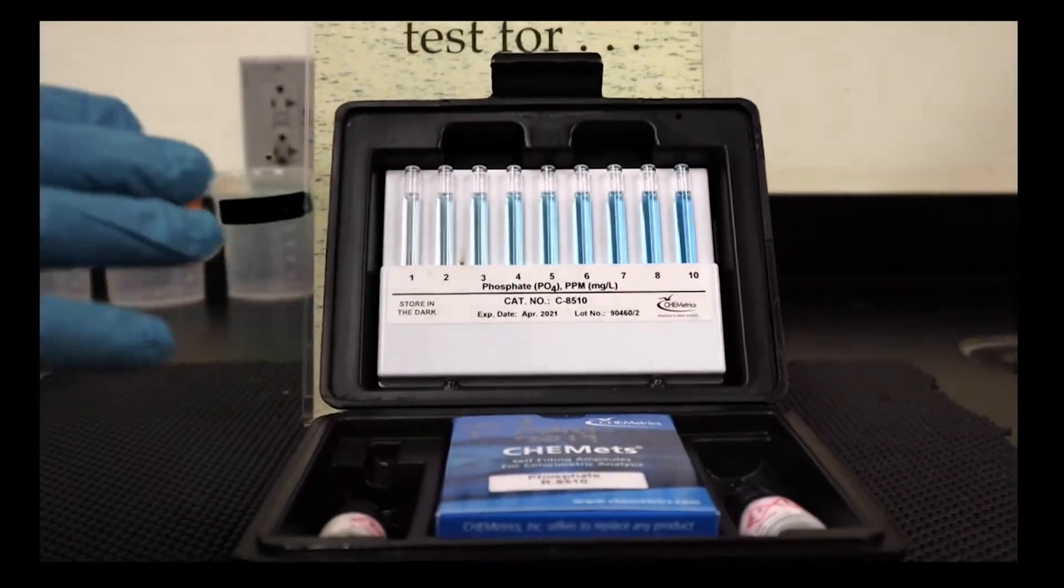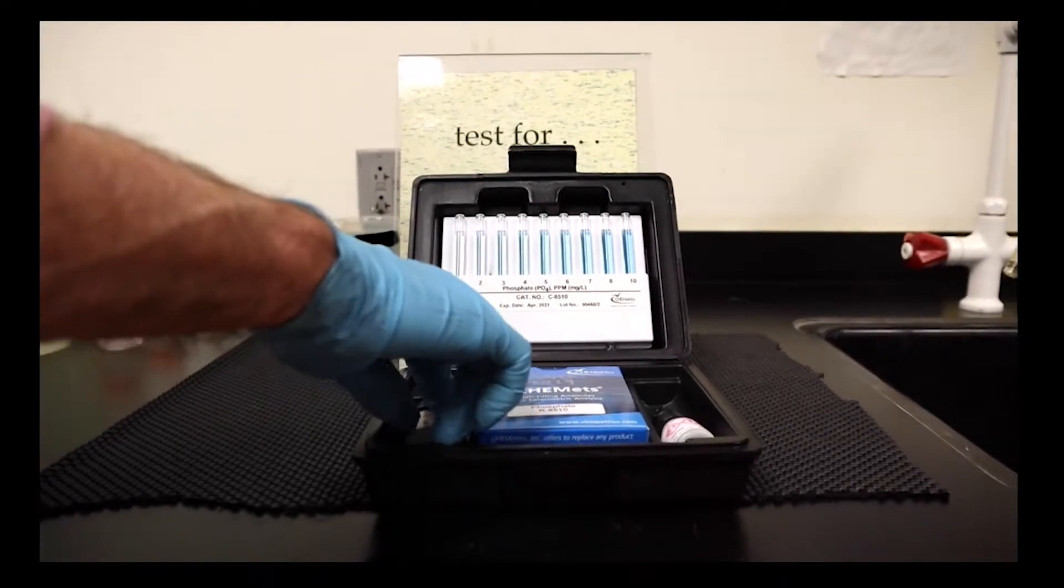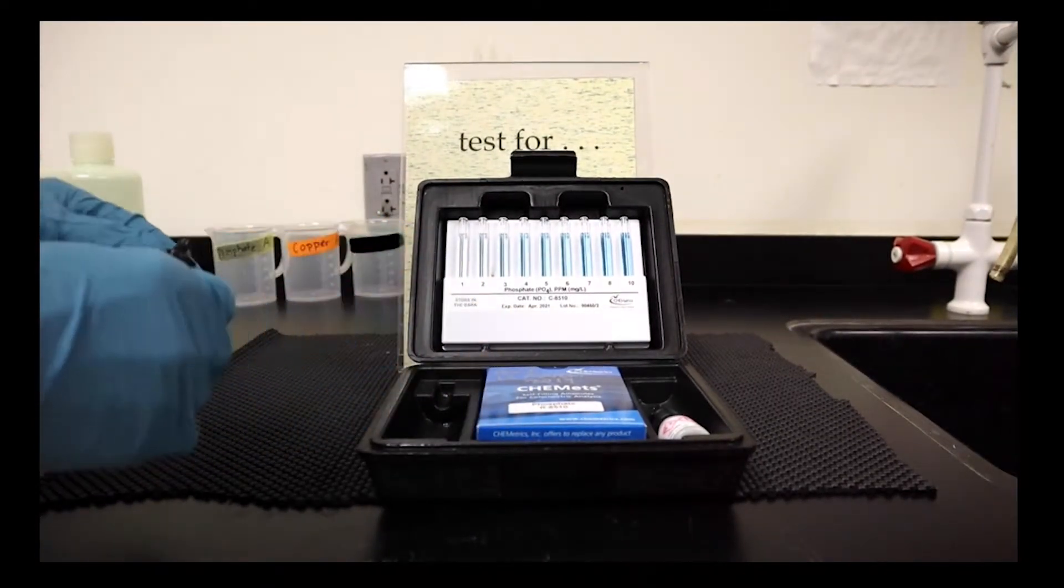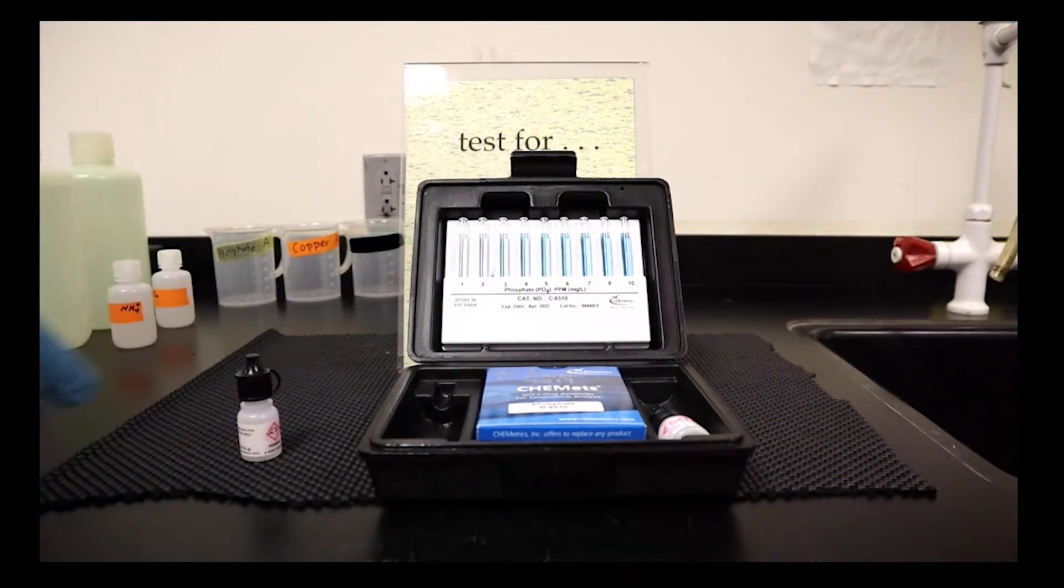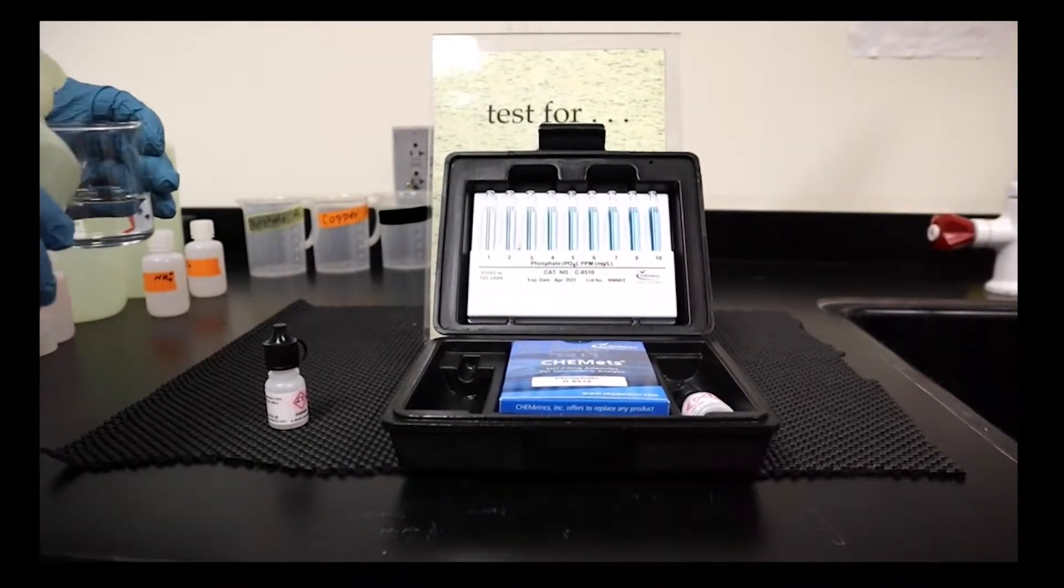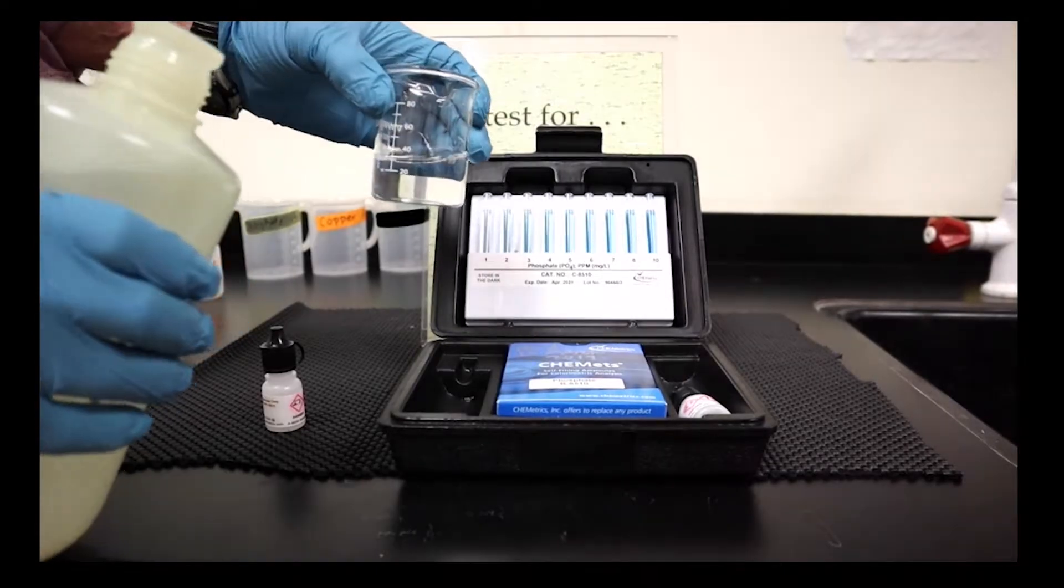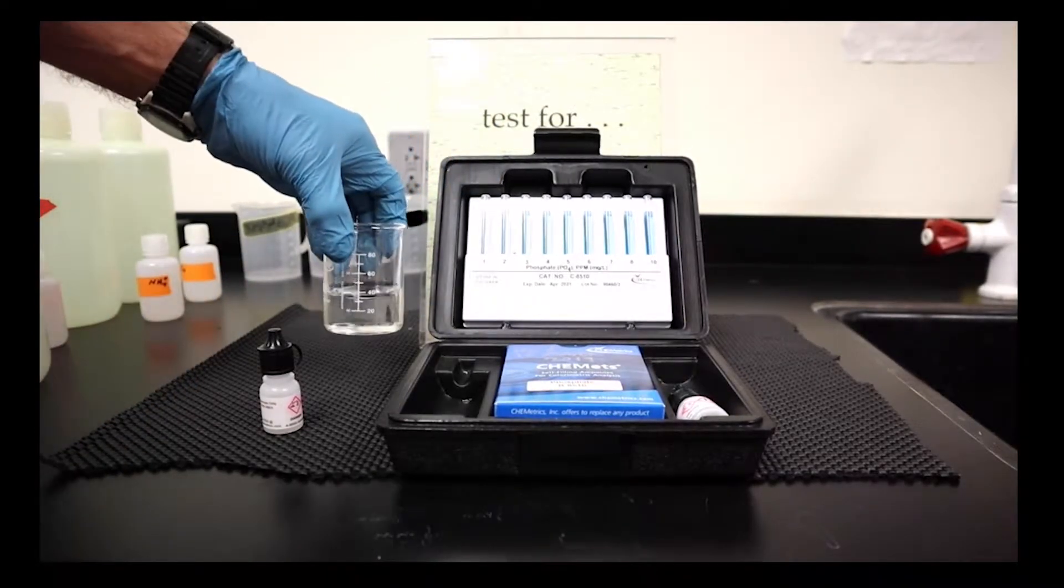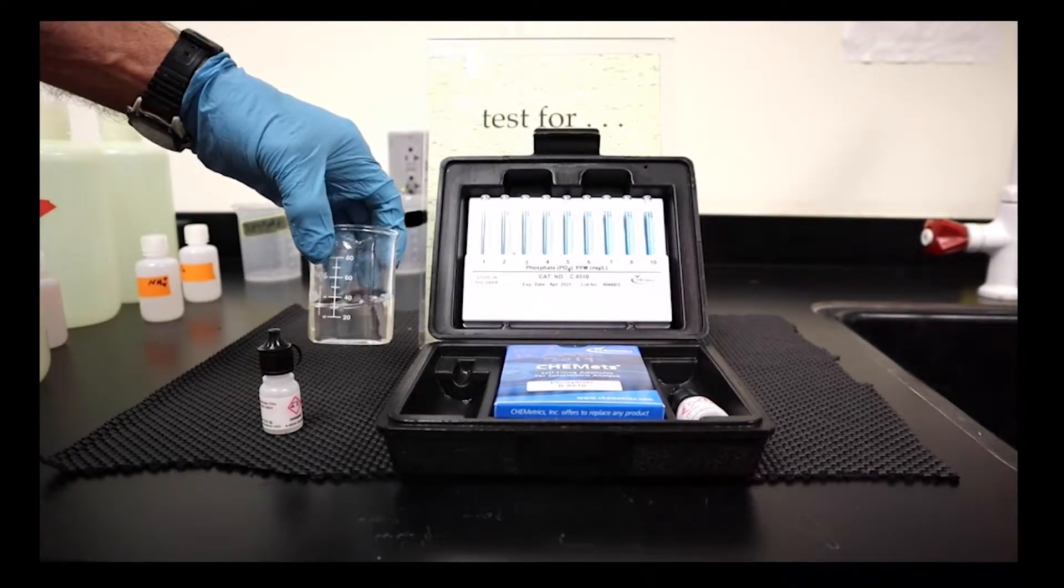So the first test will be for phosphate. What we're going to do is take a beaker and add a bit of water to this beaker, so we've just poured out of the sample bottle into the beaker.